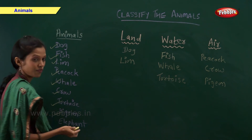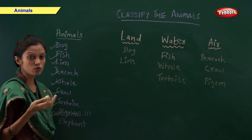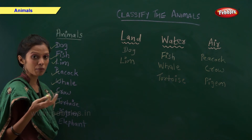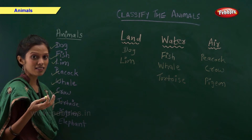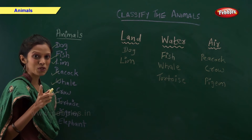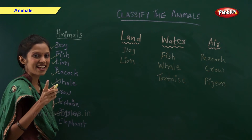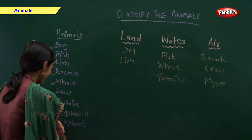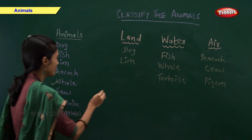Elephant. Elephant is which type of animal? I told you earlier. Yes, it is a land animal.